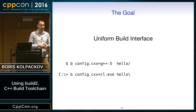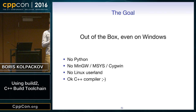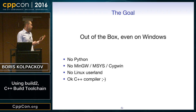We want it to work out of the box, even on Windows. We don't want to ask the user to install Python, MC, or Cygwin. Installing is easy, but maintenance is hard — there are new versions, you need to upgrade, are they compatible with what you're doing? Ideally we would want to just have a C++ compiler. For example, Build2 can be bootstrapped on a clean Windows XP box.